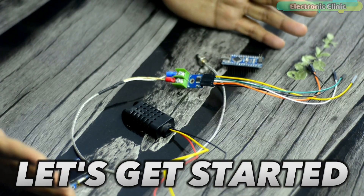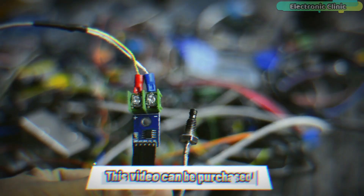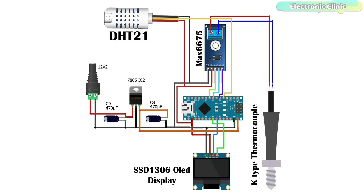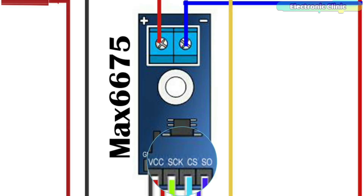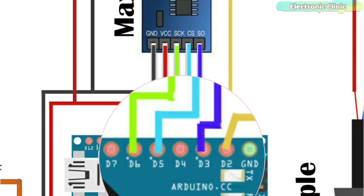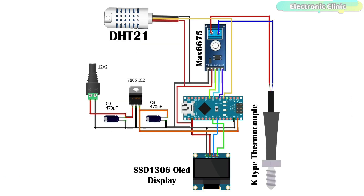Without any further delay, let's get started. The components and tools used in this video can be purchased from Amazon — purchase links are given in the description. The VCC and ground pins of the DHT21, SSD1306 OLED display module, and MAX6675 amplifier board are connected with the Arduino 3.3V and ground pins. The SCK, CS, and SO pins of the MAX6675 amplifier board are connected to Arduino pins D6, D5, and D3 respectively. The data wire of the DHT21 sensor is connected to digital pin D2. The SDA and SCL pins of the SSD1306 OLED display module are connected to analog pins A4 and A5.